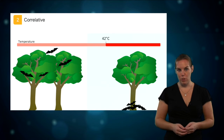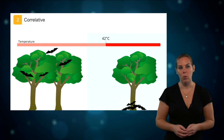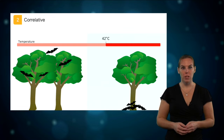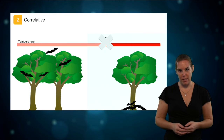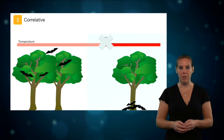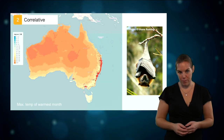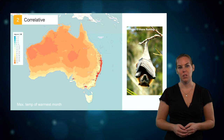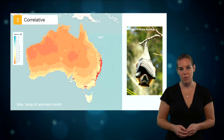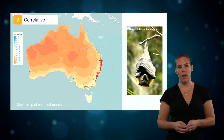The second approach is the correlative approach, which is mostly used in species distribution models and is also the focus of this course. This approach is used when we don't have the detailed information about species tolerances to particular environmental variables. The correlative approach is based on the assumption that the current distribution of a species is a good indicator of its ecological requirements.